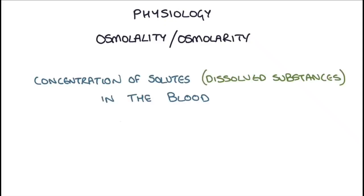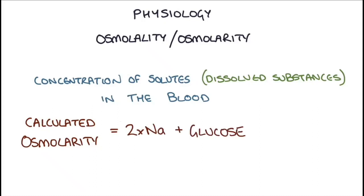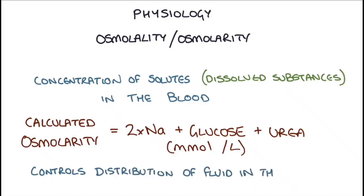When we talk about plasma osmolality or osmolarity, we're basically talking about the concentration of solutes, which are dissolved substances in the blood. The formula for calculating osmolarity is two times sodium plus glucose plus urea, all measured in millimoles per liter. Osmolarity is important because it controls the distribution of fluid in the body.